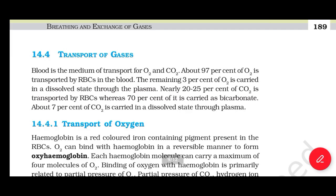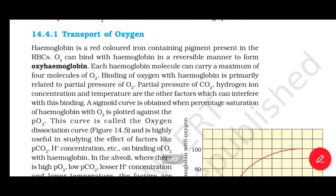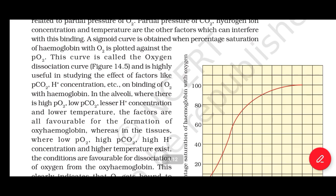Nearly 20 to 25 percent of CO2 is transported by RBCs, whereas 70 percent is carried as bicarbonate. About 7 percent of CO2 is carried in a dissolved state through plasma. Section 14.4.1: Transport of Oxygen. Hemoglobin is a red-colored, iron-containing pigment present in RBCs. O2 can bind with hemoglobin in a reversible manner to form oxyhemoglobin. Each hemoglobin molecule can carry a maximum of four molecules of O2. Binding of oxygen with hemoglobin is primarily related to partial pressure. Partial pressure of CO2, hydrogen ion concentration, and temperature are other factors that can interfere with this binding. A sigmoid curve obtained when percentage saturation of hemoglobin with O2 is plotted against PO2 is called the oxygen dissociation curve.